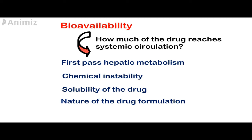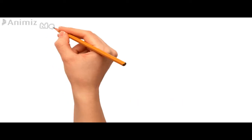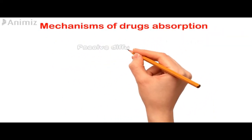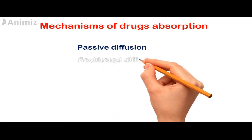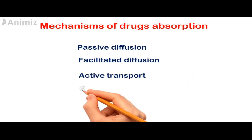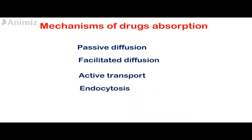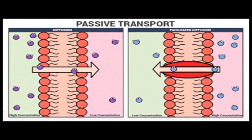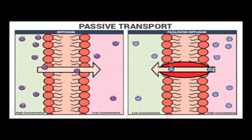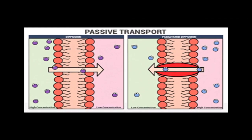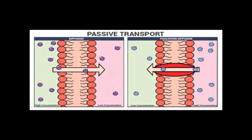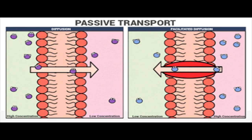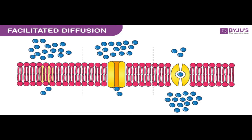Drugs, depending on their chemical properties, can be absorbed from the gastrointestinal tract either by passive diffusion, facilitated diffusion, active transport, or endocytosis. For passive diffusion, the drug moves from a region of high concentration to one of lower concentration. It does not involve a carrier, it is not saturable, and it shows low structural specificity. Most drugs are absorbed by this mechanism.